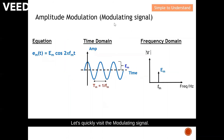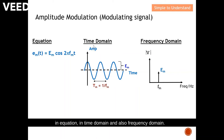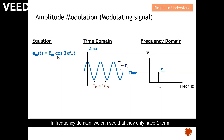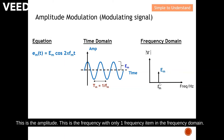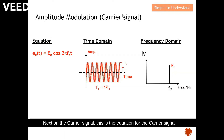Let's quickly revisit the modulating signal. We can express the modulating signal in both the time domain and the frequency domain. In the time domain this is how it looks, and in the frequency domain you can see there is only one term — at frequency fm with amplitude em. So there is only one frequency component in the frequency domain for the modulating signal.